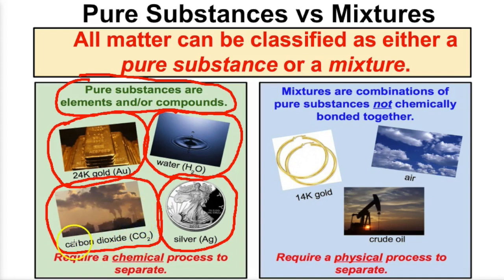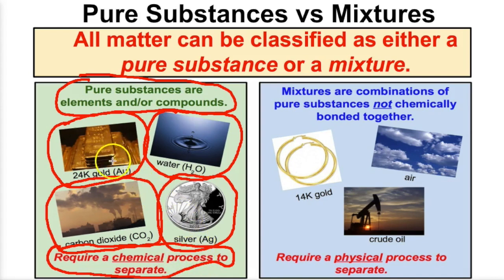One thing you need to know about pure substances is that compounds require a chemical process to separate. However, you can't chemically separate elements — they're already broken down to their simplest forms. So pure substances are either elements or compounds.